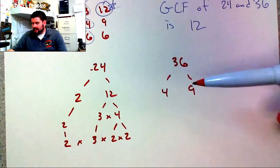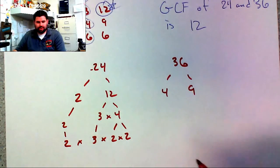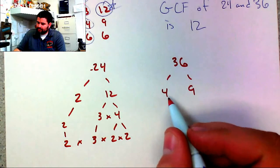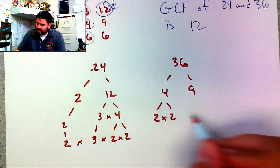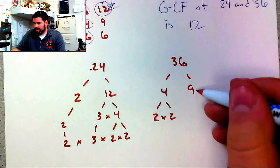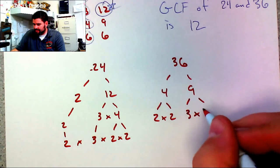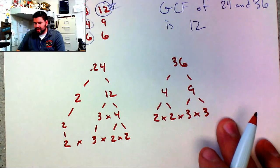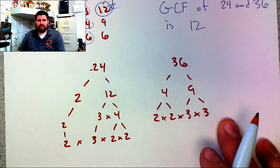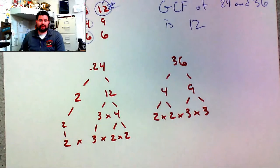For 36, using 4×9: 4 breaks into 2×2, and 9 breaks into 3×3. So the prime factorization of 36 is 2×2×3×3. If I multiply all of those together, I get 36.